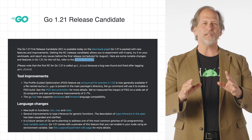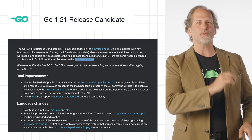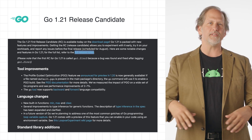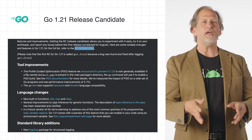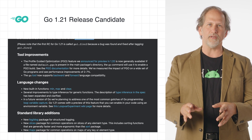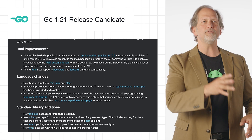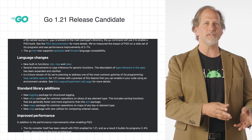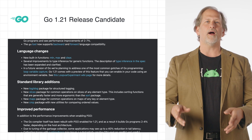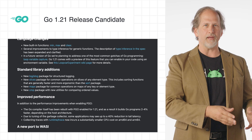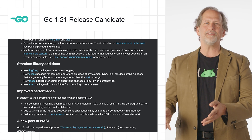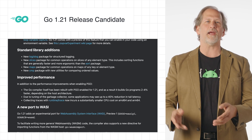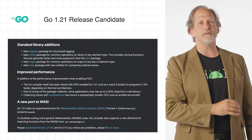We released the Go 1.21 first release candidate, packed with new features and improvements, such as the GA for profile-guided optimization, new built-in functions and improvements to type inference for generic functions, a new log slog package for structured logging, a new slices package, a new maps package, a new comparison package, additional performance improvements, and an experimental port for WebAssembly system interface.